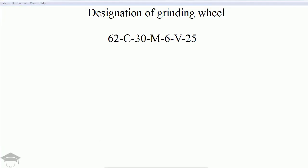In this video I'll be explaining the designation of a grinding wheel. A typical designation of a grinding wheel consists of seven terms — the first number and the last number,